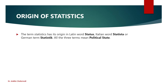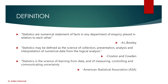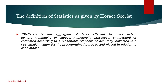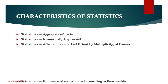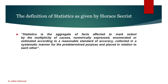We discussed the origin of statistics, then the meaning of statistics in both singular and plural sense. We discussed definitions of statistics, and the definition given by Hores Secret was the best because it includes all characteristics: aggregate of facts, numerically expressed, affected by a multiplicity of causes, enumerated or estimated according to a reasonable standard of accuracy, collected in a systematic manner, for a defined purpose, and comparable. If you remember this definition, you don't need to separately remember the characteristics.